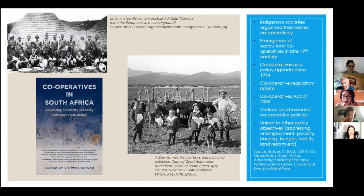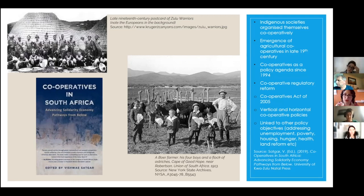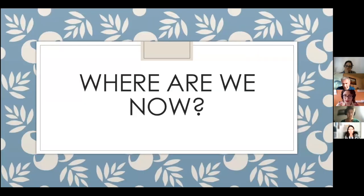There was an infusion of cooperative policies both vertically and horizontally across scales of government. South Africa is fairly progressive in that cooperatives are linked to many policy objectives — addressing unemployment, poverty, housing, hunger, health, land reform, and so forth. Unfortunately, this progressiveness only really exists at the policy level. I also want to draw attention to an important book edited by Prof. Vishwa Satgar of Wits University, which traces the history of cooperatives in South Africa and looks at various schools of thought on advancing solidarity economy pathways from below.